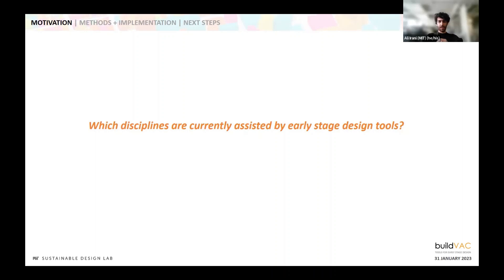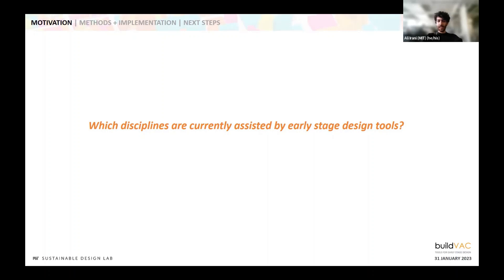We want to ask another question looking at tools: what tools do these disciplines use, and what happens in early stage design? If we consider which disciplines are using early stage design exploration, we are often constrained — not many disciplines having access to these tools or having the workflow in a way where early stage design decisions can be made. Typically architectural designers, structural engineers, and sustainability experts are using tools in the early stage design. Their input covers massing, building orientation, facade design — design decisions that affect the form, massing, and spatial layout of our buildings.